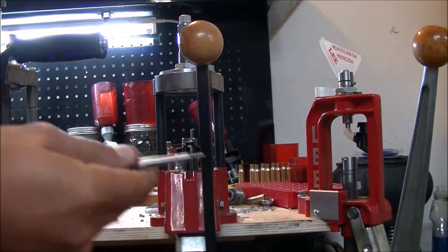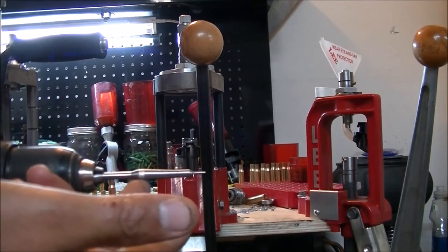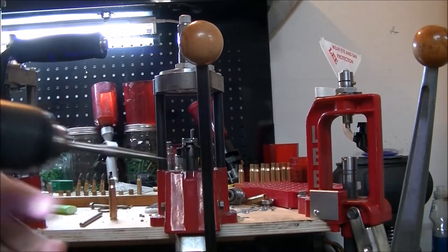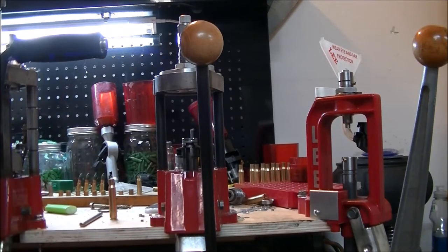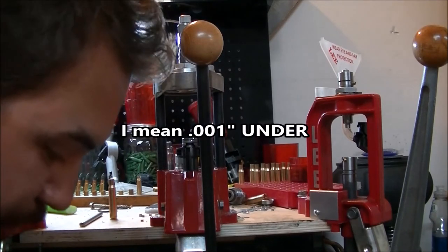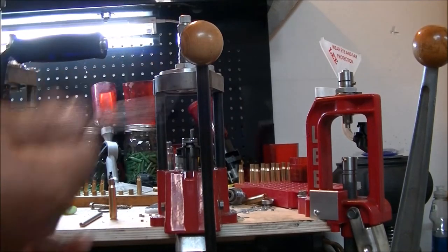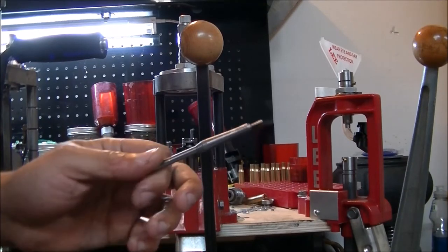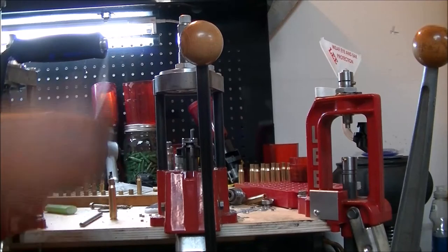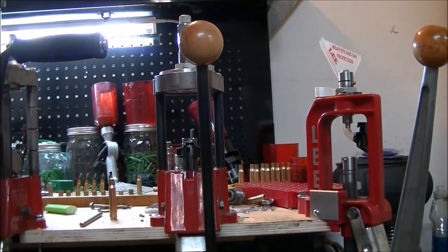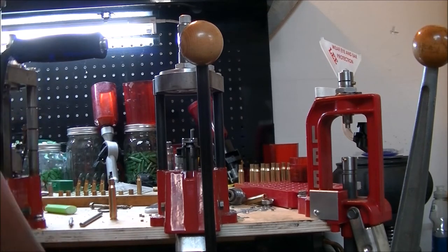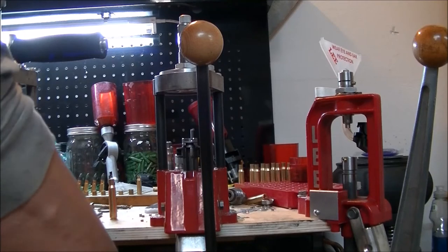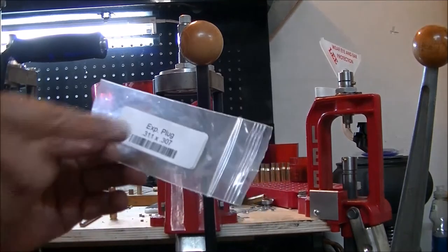At that point you can go ahead and very lightly sand it down to the dimension just over your paper patch bullet. For me, 310 or 309, and put this as your decapping pin for your resizing die and go from there. It will get you to the same, basically do the same thing that the expander plug does.